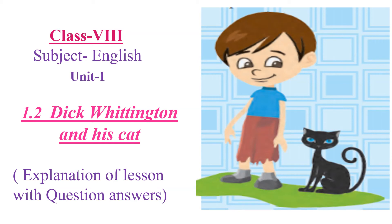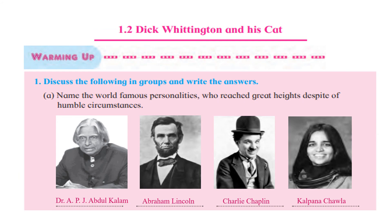This is a very wonderful story. Before the story, let us see the warming up activity. Question number 1: discuss the following in group and write the answers. Some famous personalities are given here — you have to identify the names of these people. First, everybody knows Dr. APJ Abdul Kalam. Second, Abraham Lincoln. Third, Charlie Chaplin, and fourth, Kalpana Chawla.